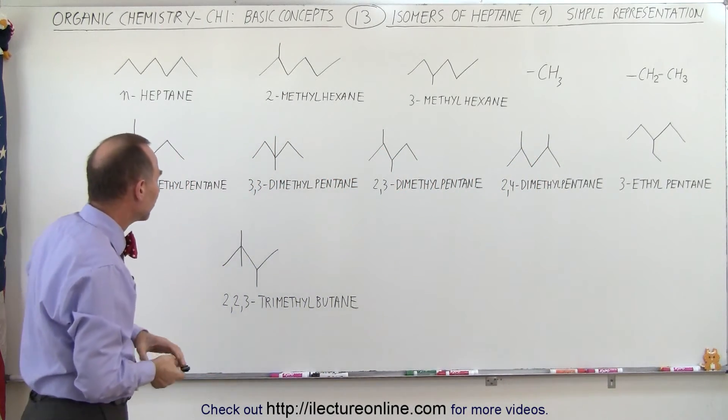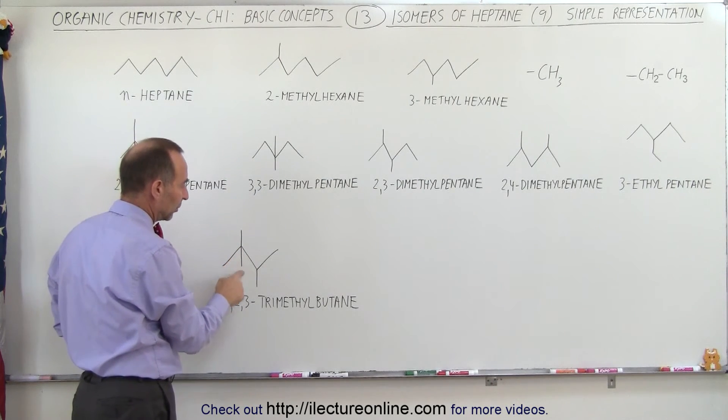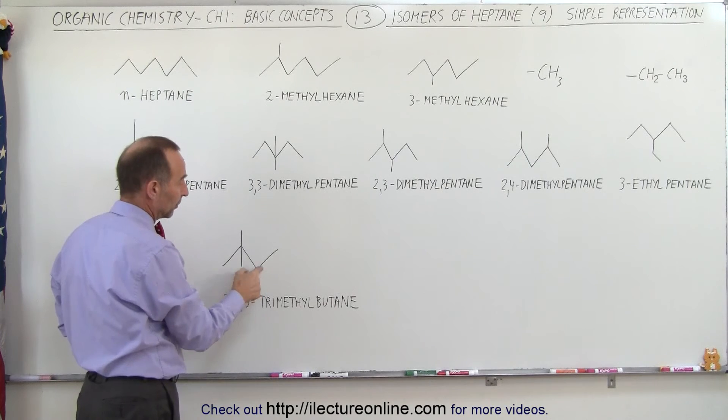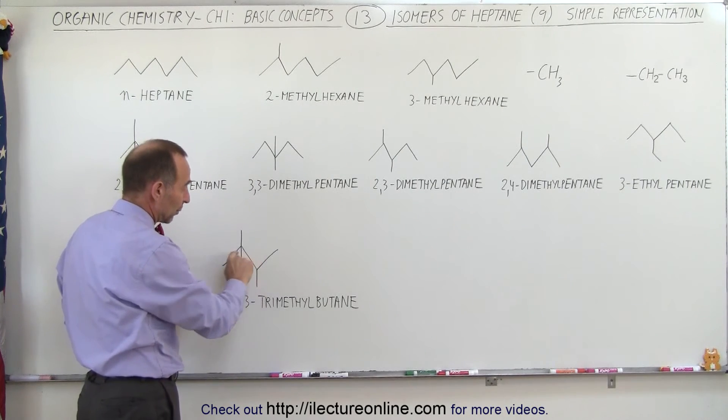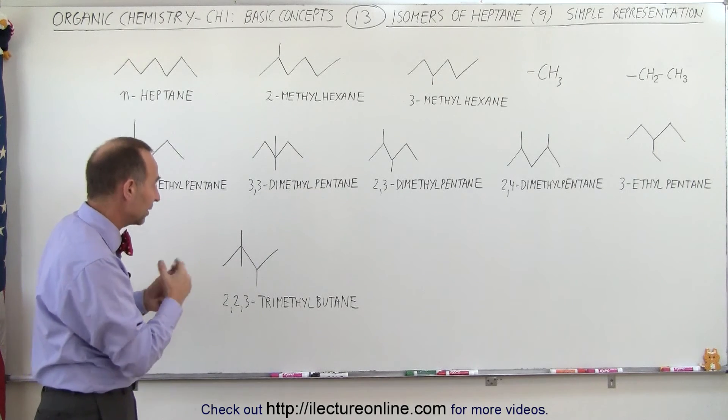One more possibility is to have three methyl groups, two connected to the second carbon, one connected to the third carbon. Now you can say, well what if I connect two here and one there? You flip it around, you have exactly the same isomer again, so there's only one of these.